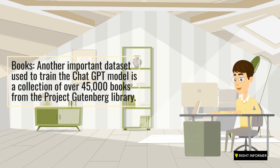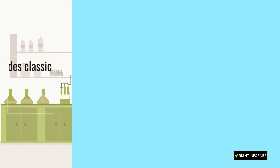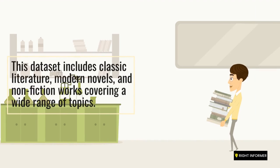Another important dataset used to train the ChatGPT model is a collection of over 45,000 books from the Project Gutenberg library. This dataset includes classic literature, modern novels, and non-fiction works covering a wide range of topics.